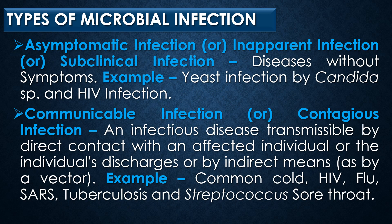Asymptomatic infection is also called inapparent infection or subclinical infection. Disease without symptoms is referred to as asymptomatic infection. Some examples are the initial condition of syphilis, HIV infection, human papilloma virus infection, herpes simplex virus infection, hepatitis B infection, and hepatitis C virus infection.